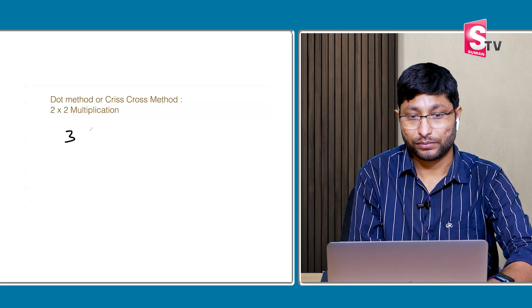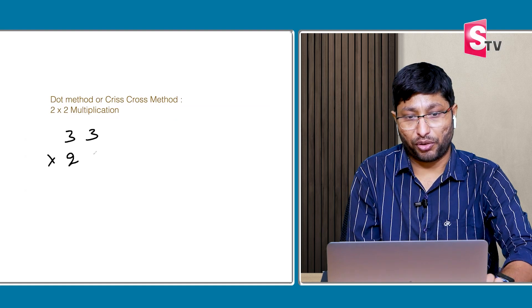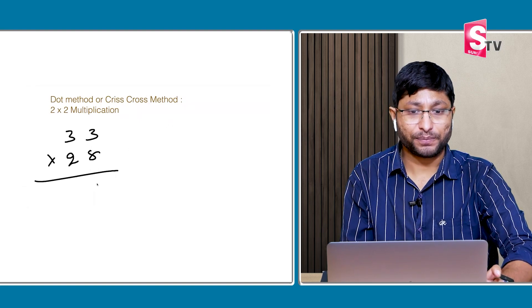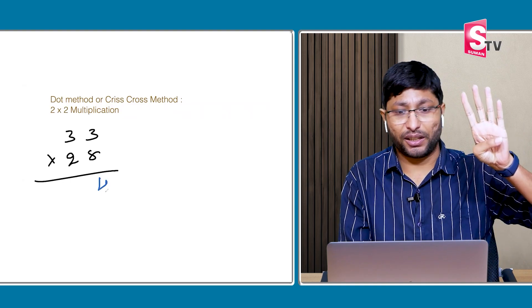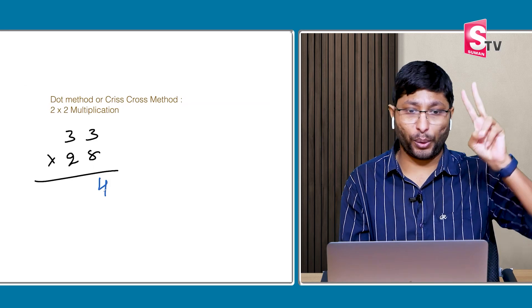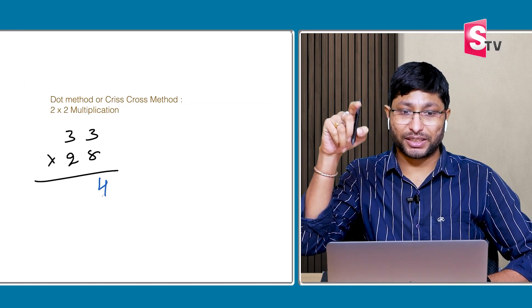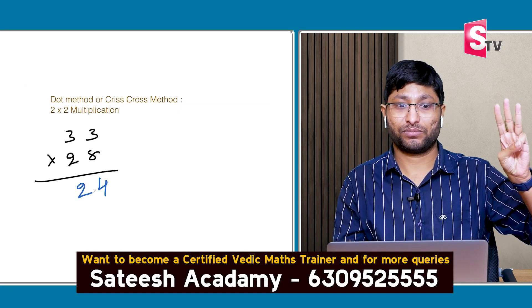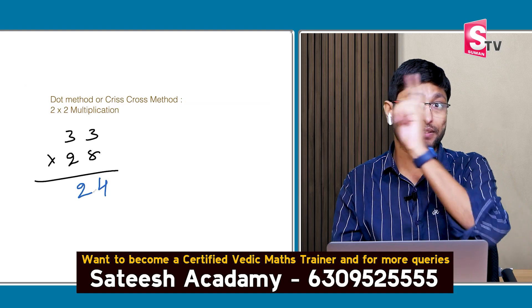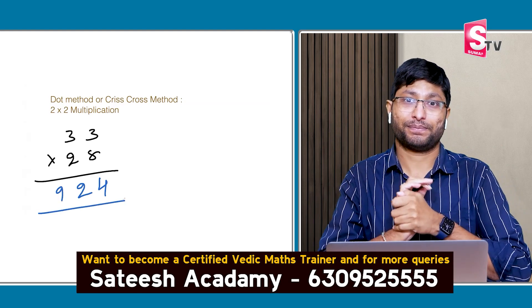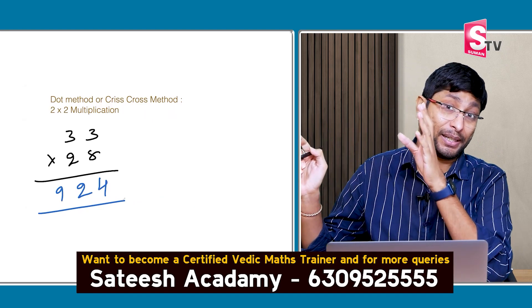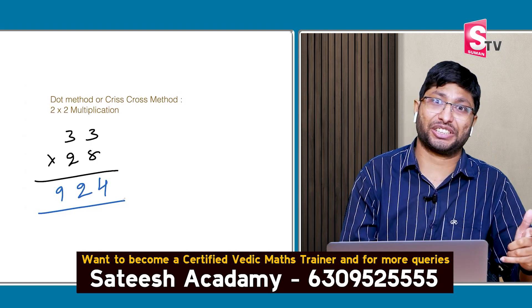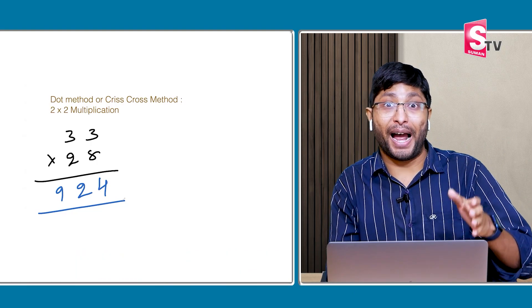33 × 28. Everything in the mind: Step 1: 3 × 8 = 24. Write down 4, carry 2 in the mind. Step 2: 8 × 3 = 24, plus 3 × 2 = 6, gives 30. Plus 2 carry = 32. Write down 2, carry 3. Step 3: 3 × 2 = 6. Plus 3 = 9. The answer is 924.